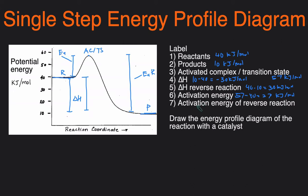So that would be 67 minus 10, or 57 minus 10. So that would be 47 kilojoules per mole.